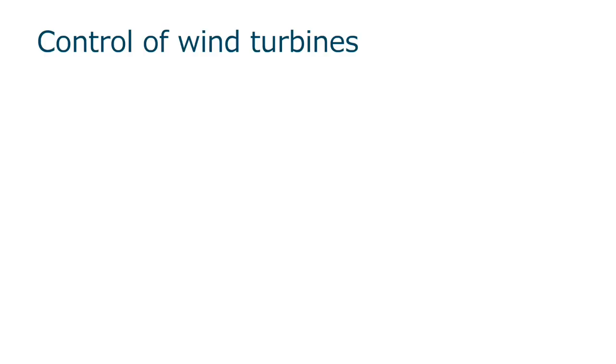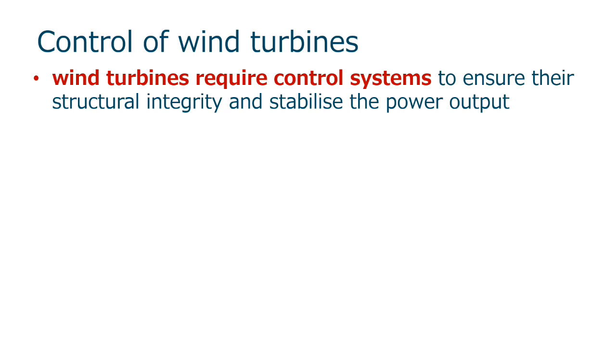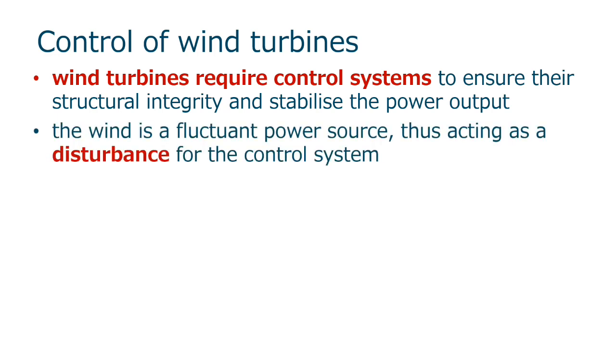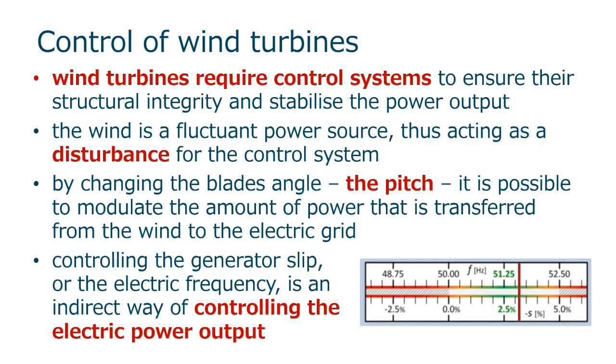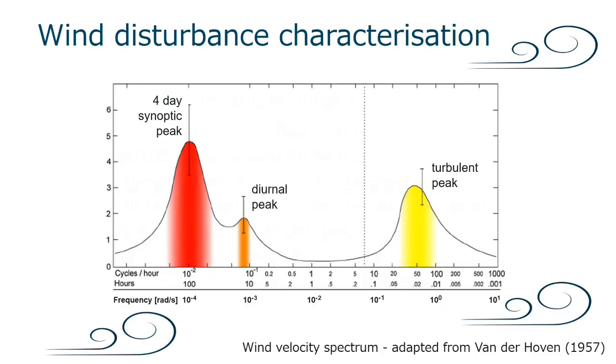Some considerations regarding the control of wind turbines. Wind turbines require control systems to ensure their structural integrity, and stabilize the power output. The wind is a fluctuating power source, thus acting as a disturbance for the control system. By changing the blade's angle, the pitch, it is possible to modulate the amount of power that is transferred from the wind to the electric grid. Controlling the generator slip, or the electric frequency, is an indirect way of controlling the electric power output. This plot provides the same information regarding the expected spectrum for the wind disturbances. That will be used to set the disturbance rejection bandwidth on 0.1 radians per second.